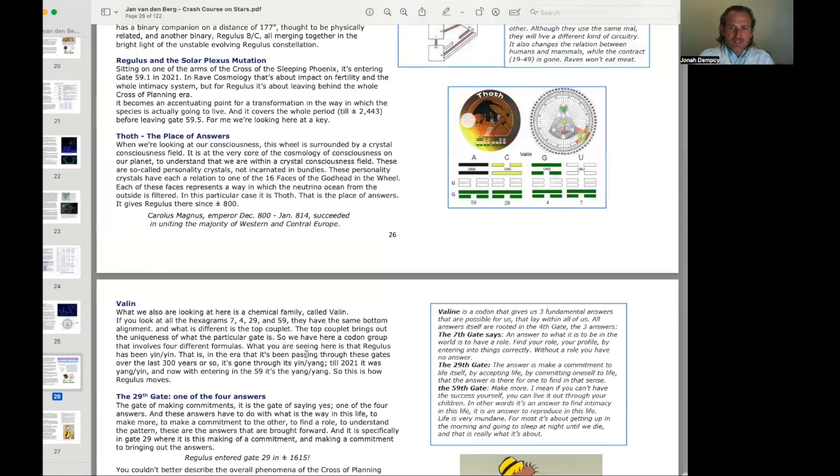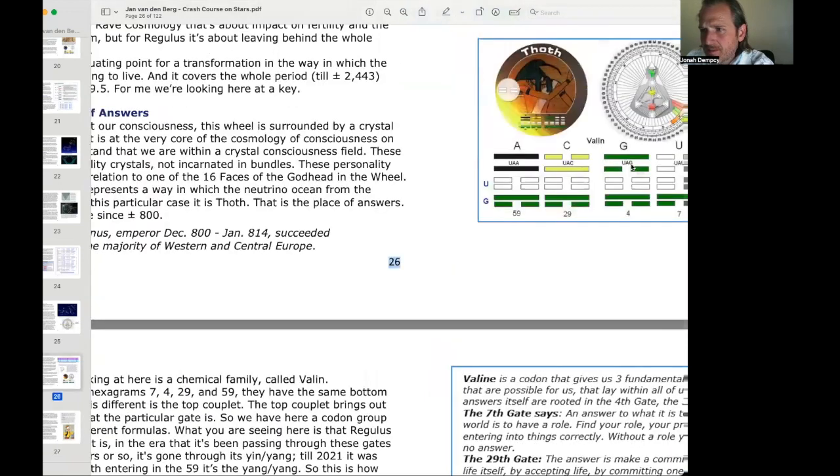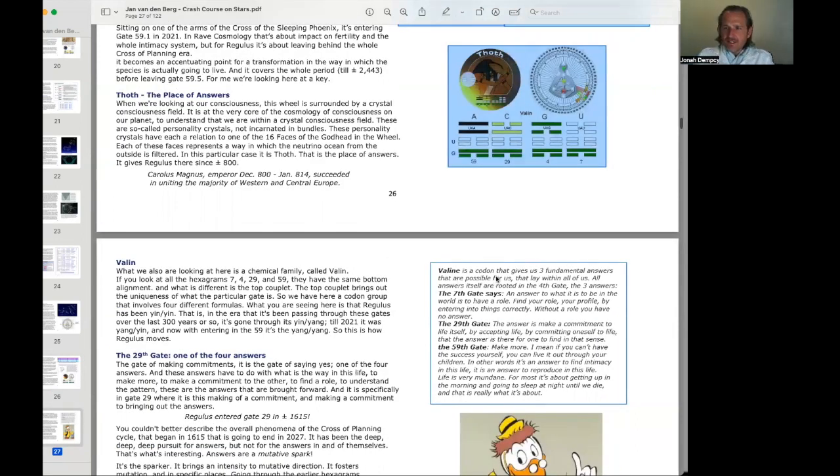The top couplet brings out the uniqueness of what the particular gate is. So we have here a codon group that involves four different formulas. What you're seeing here is that Regulus has been yin-yin. That is, in the era that it's been passing through these gates over the last 300 years or so, it's gone through its yin-yang. Until 2021, it was yang-yin, and now it's entering in the 59 and the yang-yang. So this is how Regulus moves.